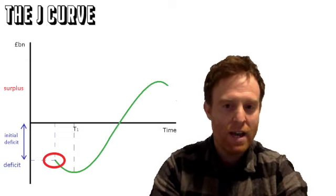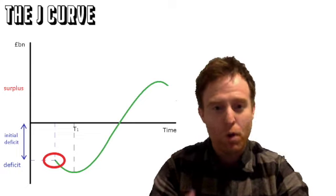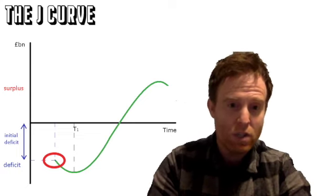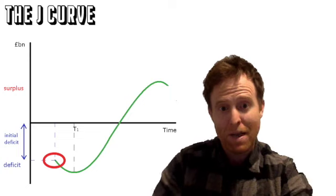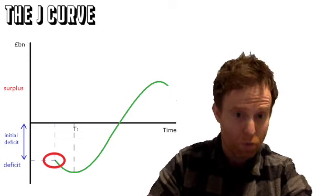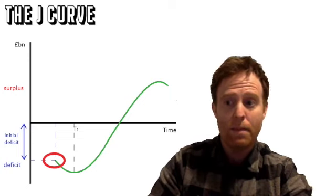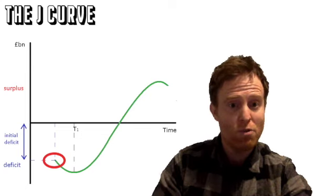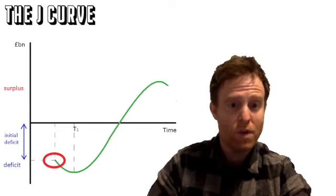With regards to the Marshall-Lerner Condition, that was all about price elasticity of demand. If your price elasticity of demand for imports and exports is greater than one, then that elasticity will mean it should work and devaluation should be successful.